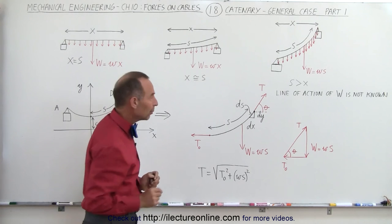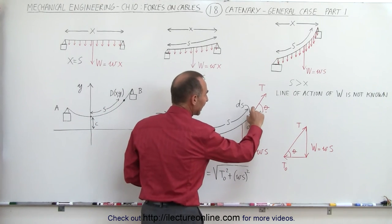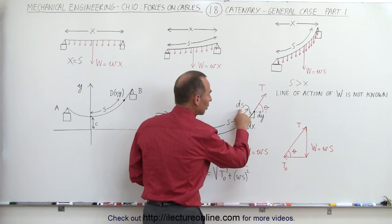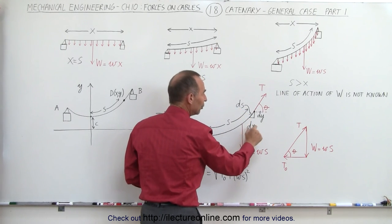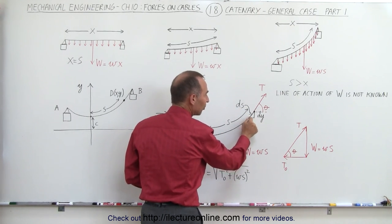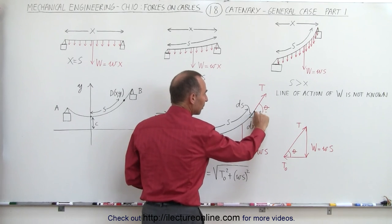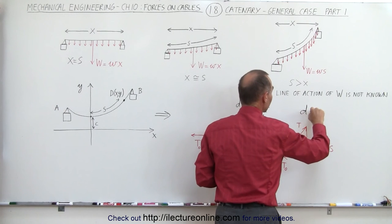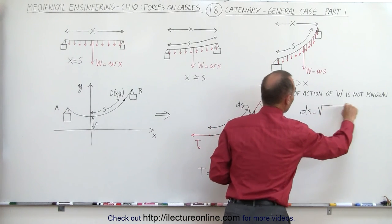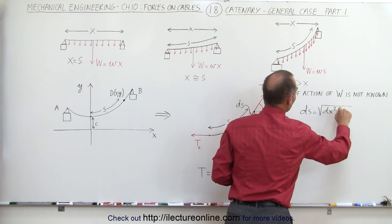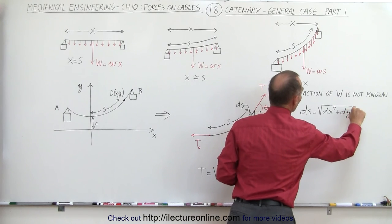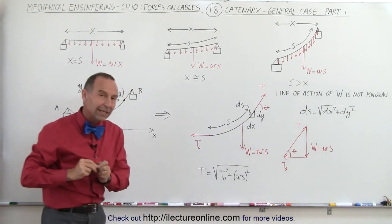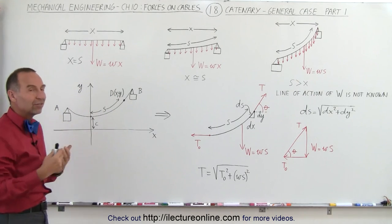One more thing to notice: if we take any small section of the cable, we can call that ds. We have a small dx and a small dy, and we can write that a small section ds equals the square root of dx squared plus dy squared. We will need that later on as well.